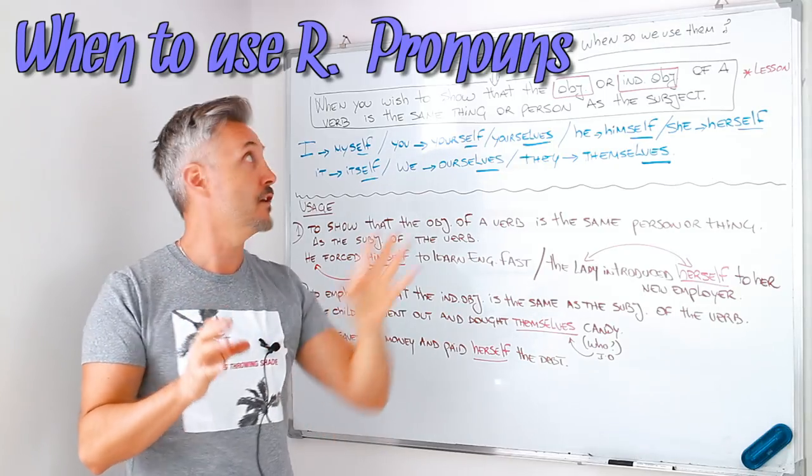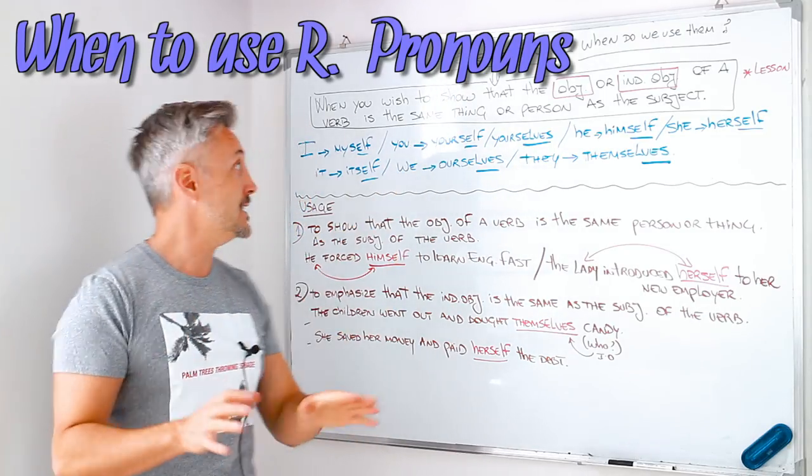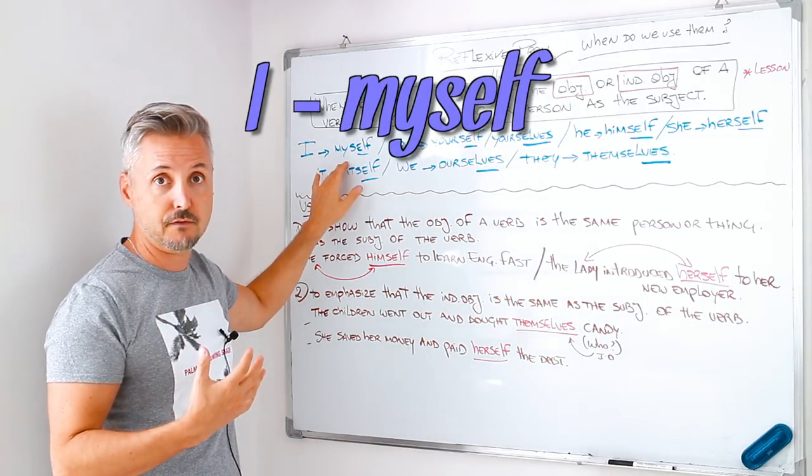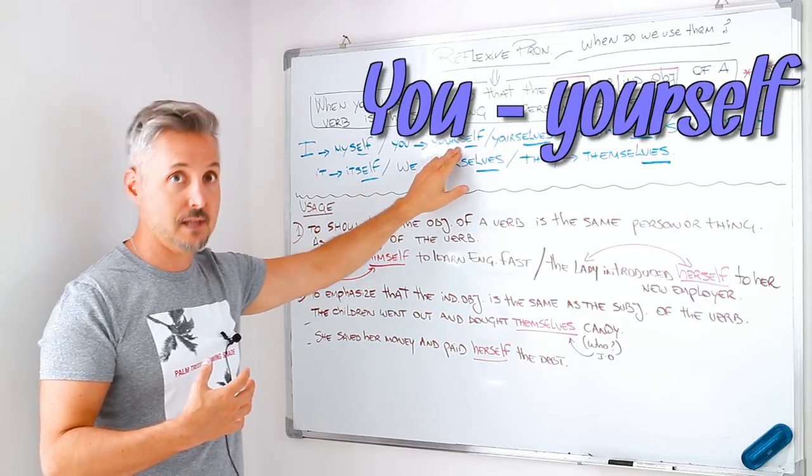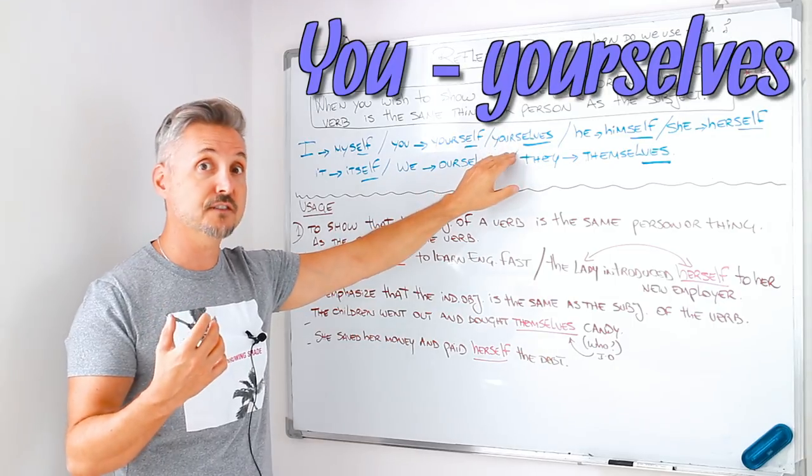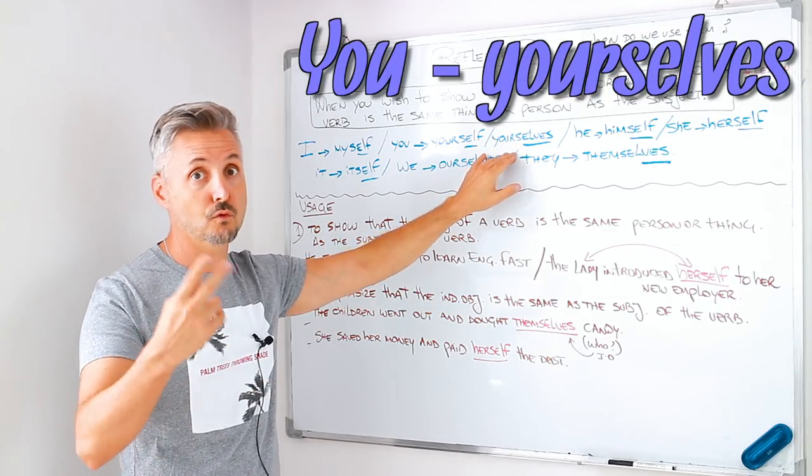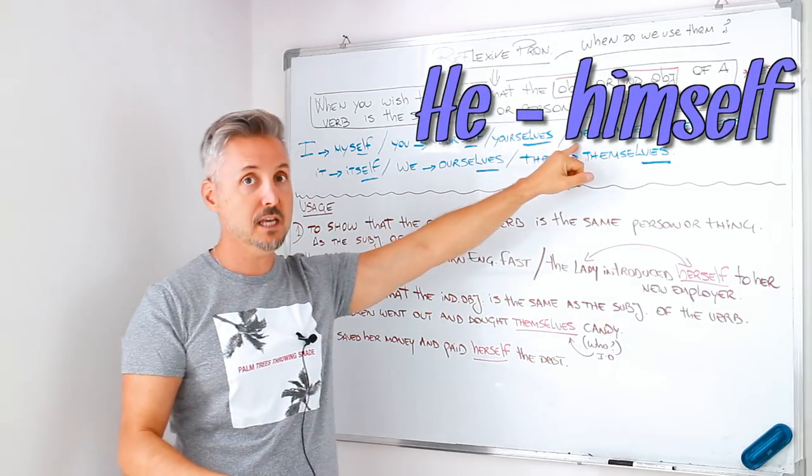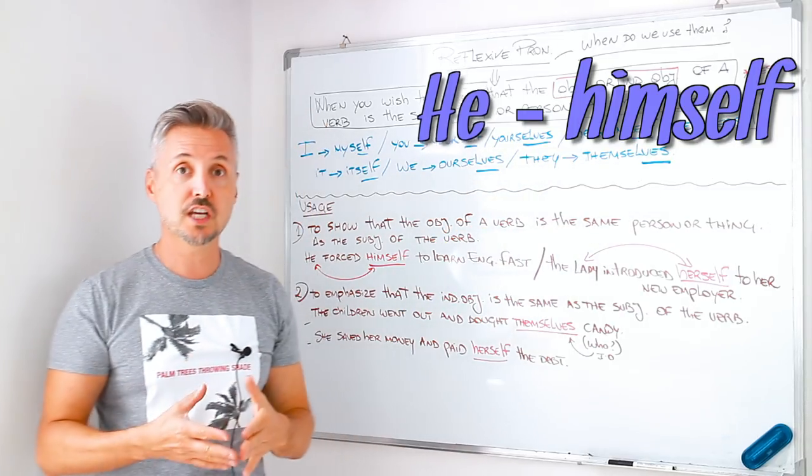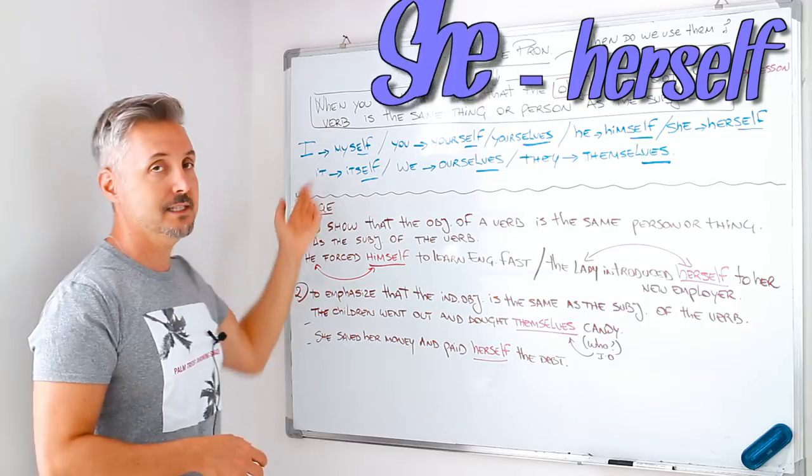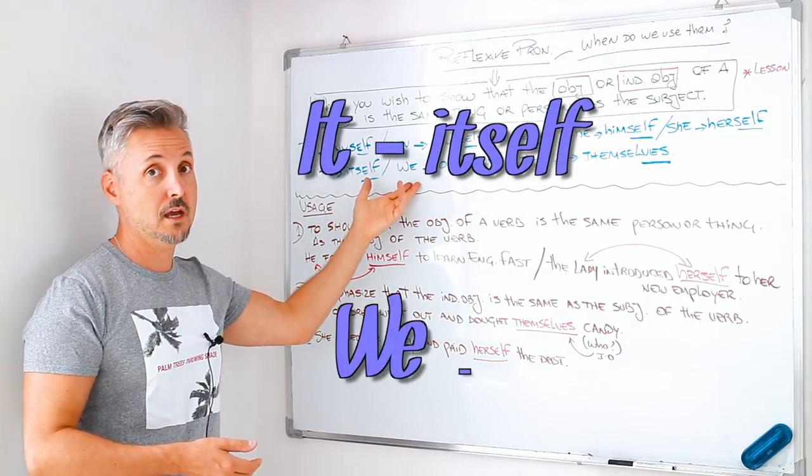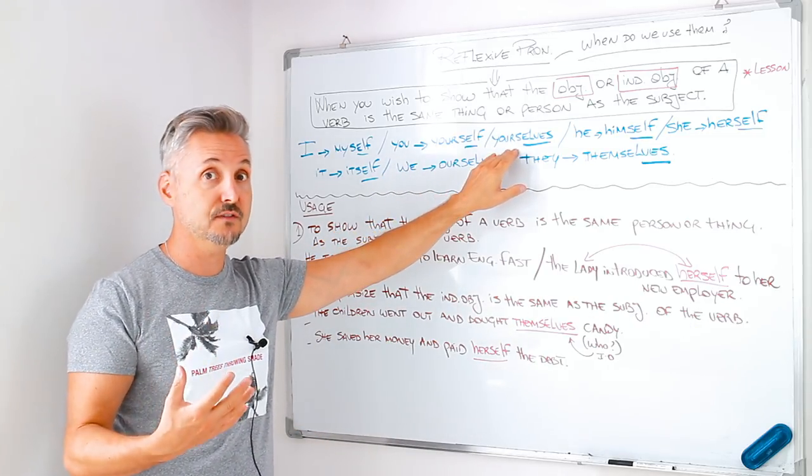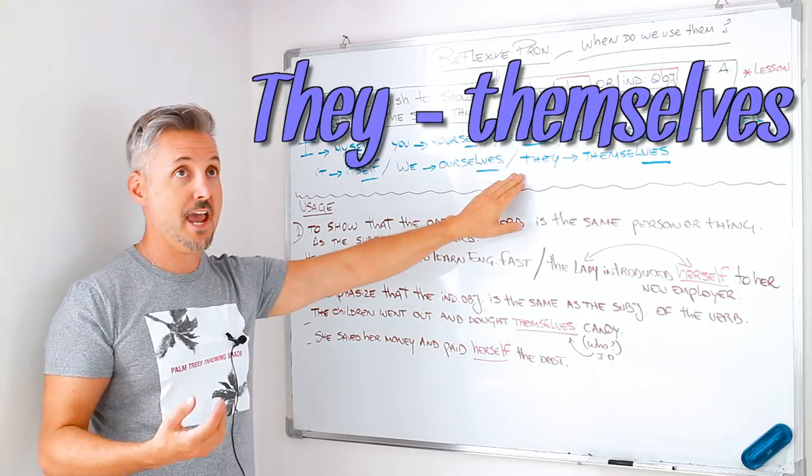This is the main point of reflexive pronouns. Reflexive pronouns are, for example, for I is myself. For you is yourself, or yourselves if it's plural. If you are you and your friend, for example, yourselves. He, himself. She, herself. It, itself. We, ourselves. You changes to yourselves because it's plural. They, themselves.